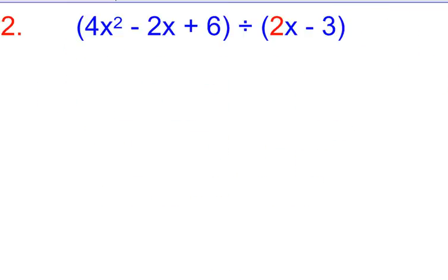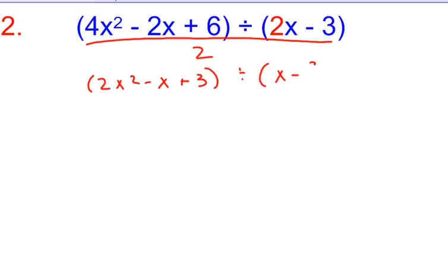So let's apply that now to number 2, just to see if we get it. So in number 2, I would start by dividing everything by 2. So I'd have 2x² - x + 3, divided by, and then I have x - 3/2.